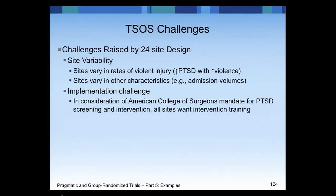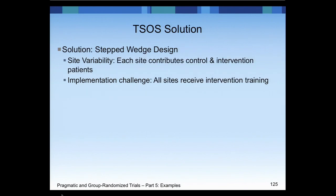Challenges included considerable variability among sites in the extent of violent injury — with more PTSD associated with violence — and variation on a variety of other characteristics. The stepped wedge design actually helps with this variability. There were also implementation challenges: the American College of Surgeons mandated activities for PTSD screening intervention, meaning all sites wanted training. The solution was that the stepped wedge design addresses site variability by providing the intervention in every site, so every site contributes both control and intervention observations, and the team provided training to all sites by the end of the study.